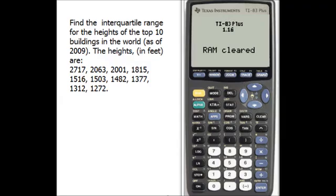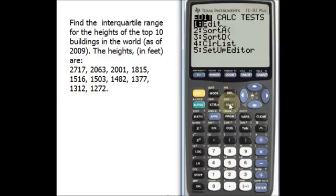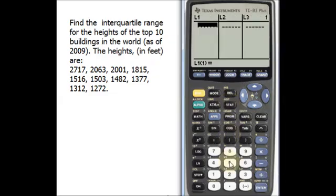The first step is we need to enter the data into a list. Press the stat button, press enter, enter the first number 2717, and press enter again. Now continue entering the numbers, pressing enter after each entry.